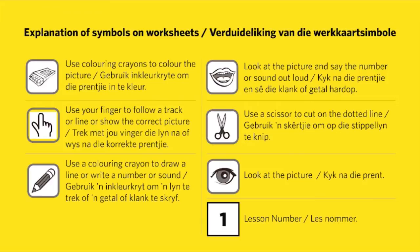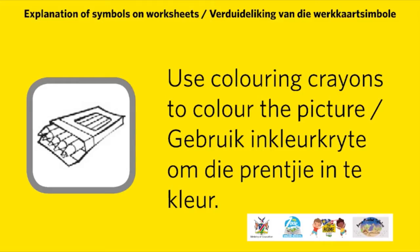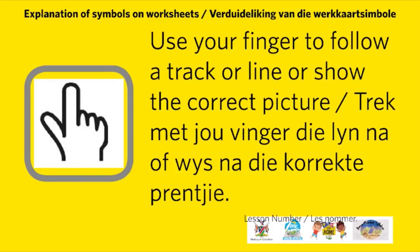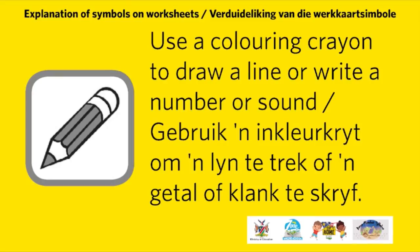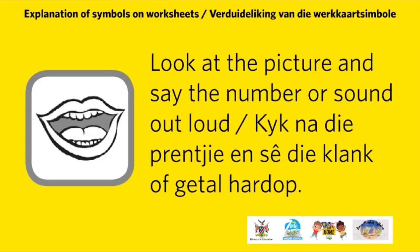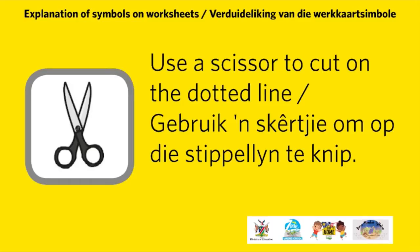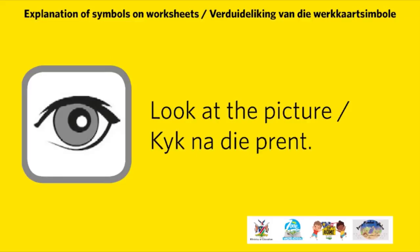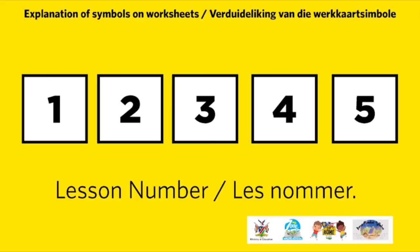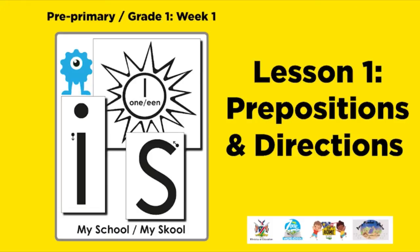Explanation of symbols on worksheets: use coloring crayons to color the picture; use your finger to follow the track or line, or show the correct picture; use a coloring crayon to draw a line or write a number or sound; look at the picture and say the number or sound out loud; use scissors to cut on the dotted line. Use these symbols for the lesson of the day, allocated at the top right side of each page — for example, Lesson One: Prepositions and Directions.